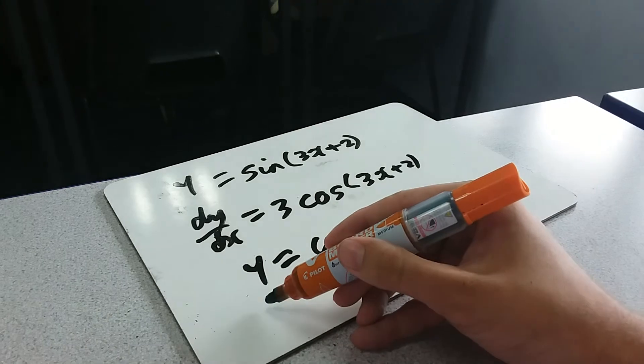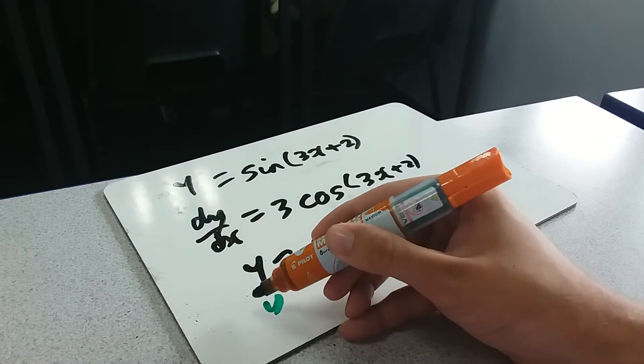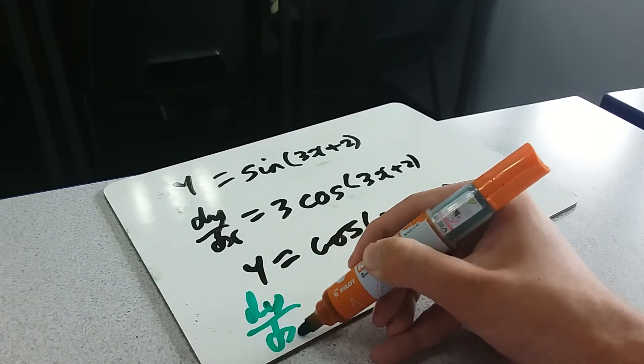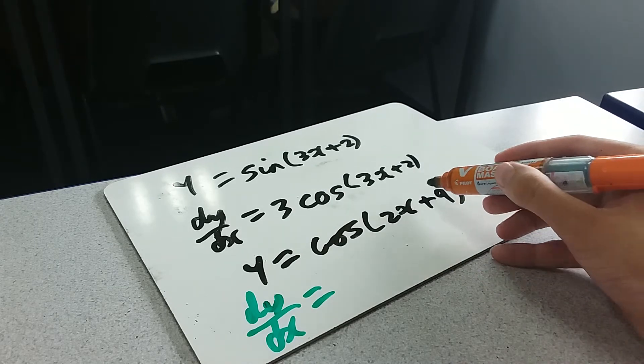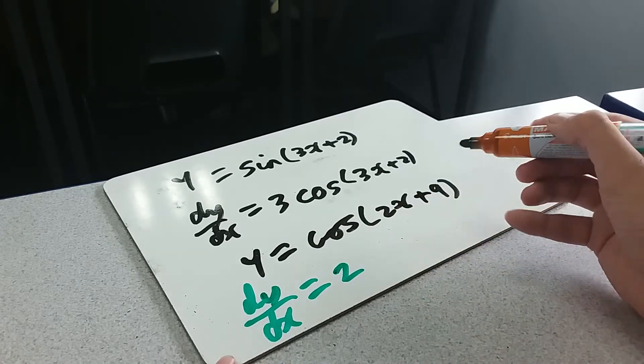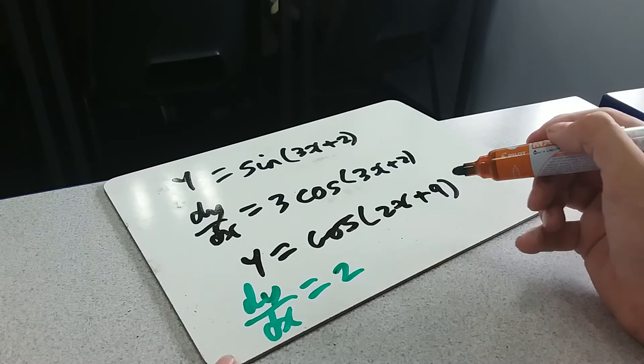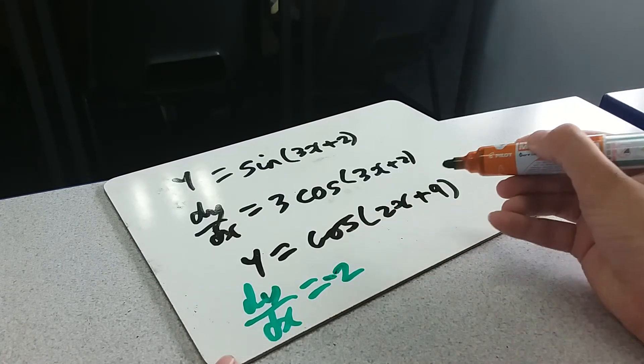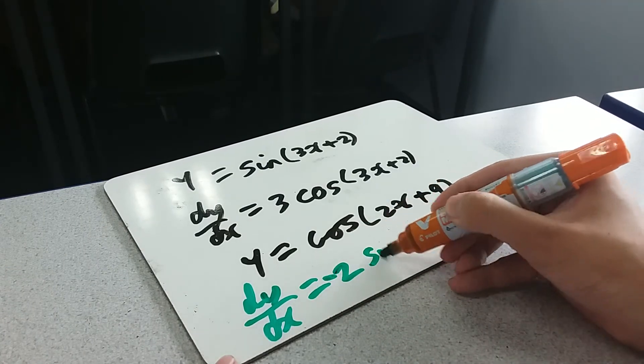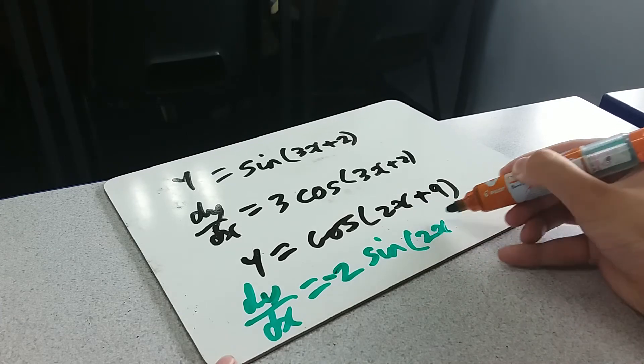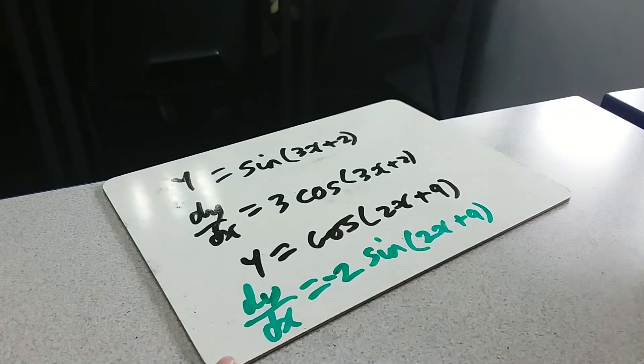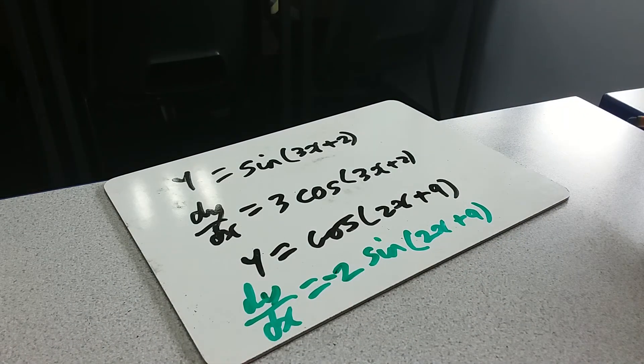Okay, so doing it by observation, dy dx is, well, the differential of inside is 2, so we get 2. Cos goes to minus sine, I'm going to stick the minus at the beginning, sine of 2x plus 9. Done. Cool.